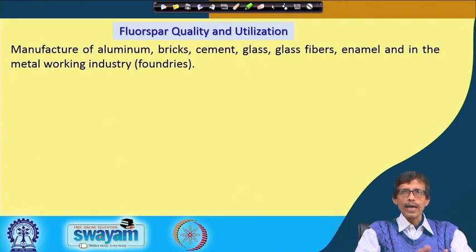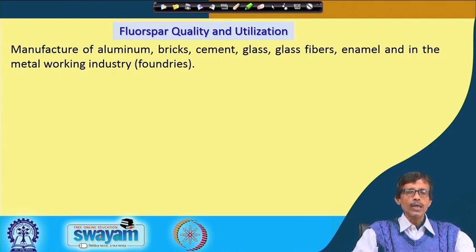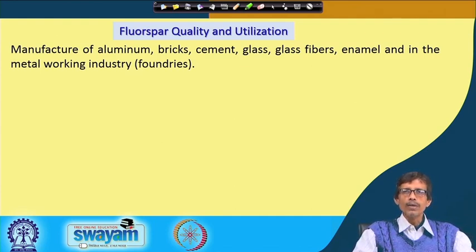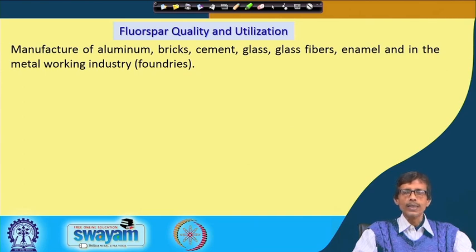The aluminum ore is bauxite, which is alumina Al₂O₃. If Al₂O₃ can be converted to AlF₃ or any other species, we can very easily get the corresponding metallic aluminum. We should use the fluoride ion, fluoride anion, or any fluoride salt — even hydrofluoric acid obtained from fluorspar — to produce aluminum. The aluminum industry will therefore be dependent on the availability of fluorspar.